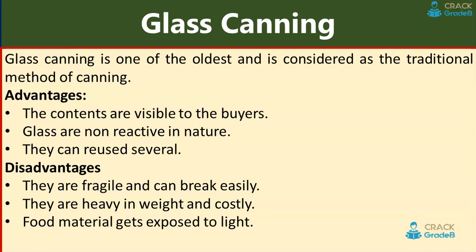Advantages of glass cans: the contents are visible to buyers, glass is non-reactive in nature, and they can be reused several times. Disadvantages: they are fragile and can break easily, they are heavy and costly, difficult to transport, and food gets exposed to light which can damage the food.